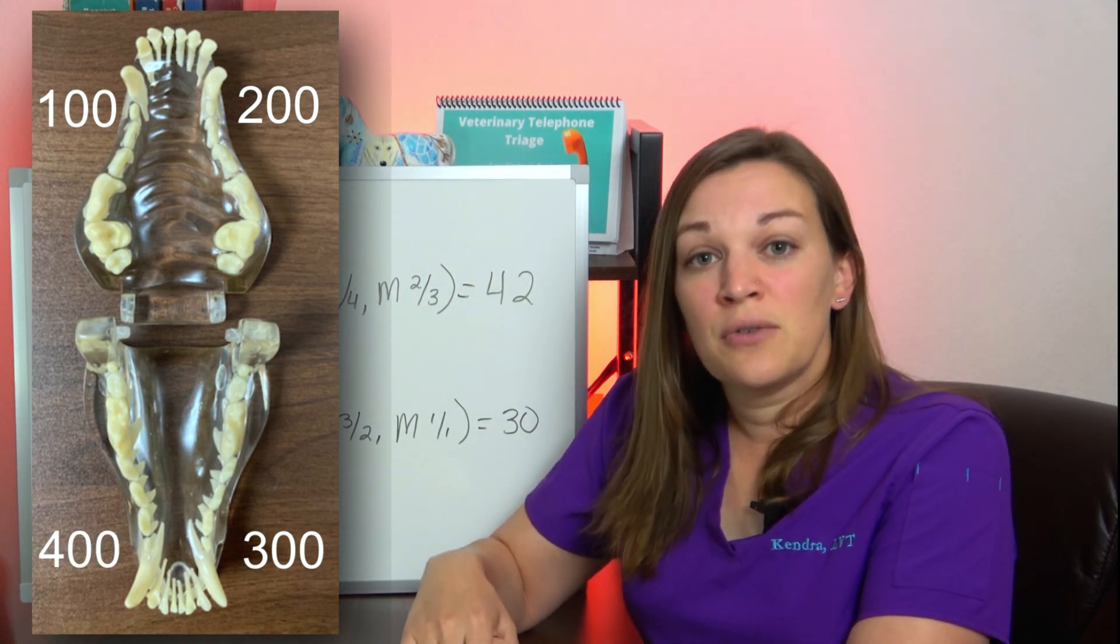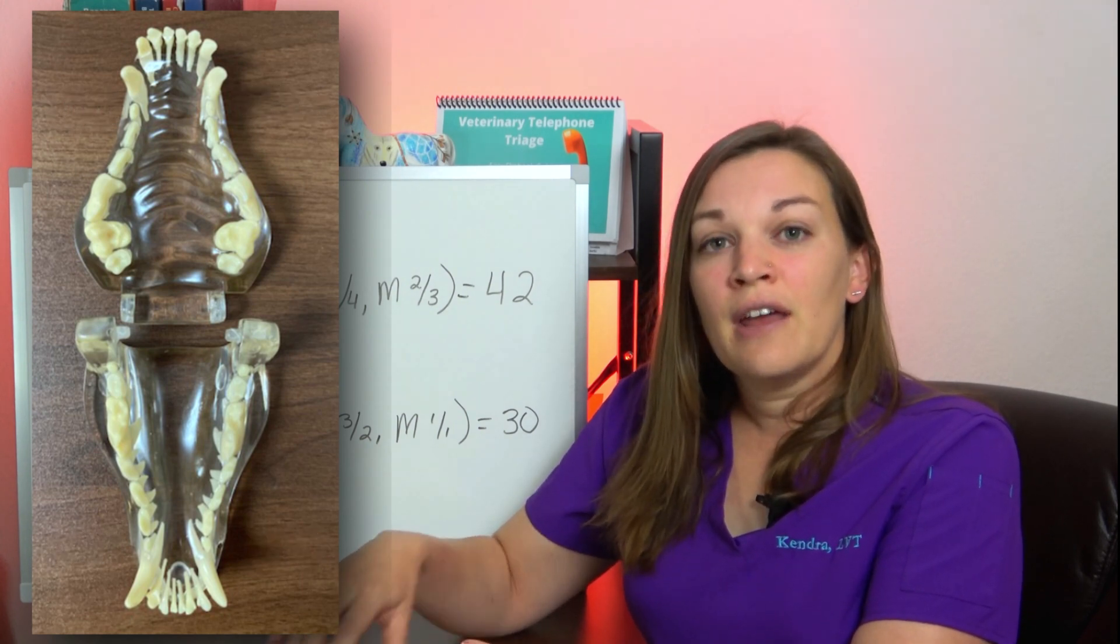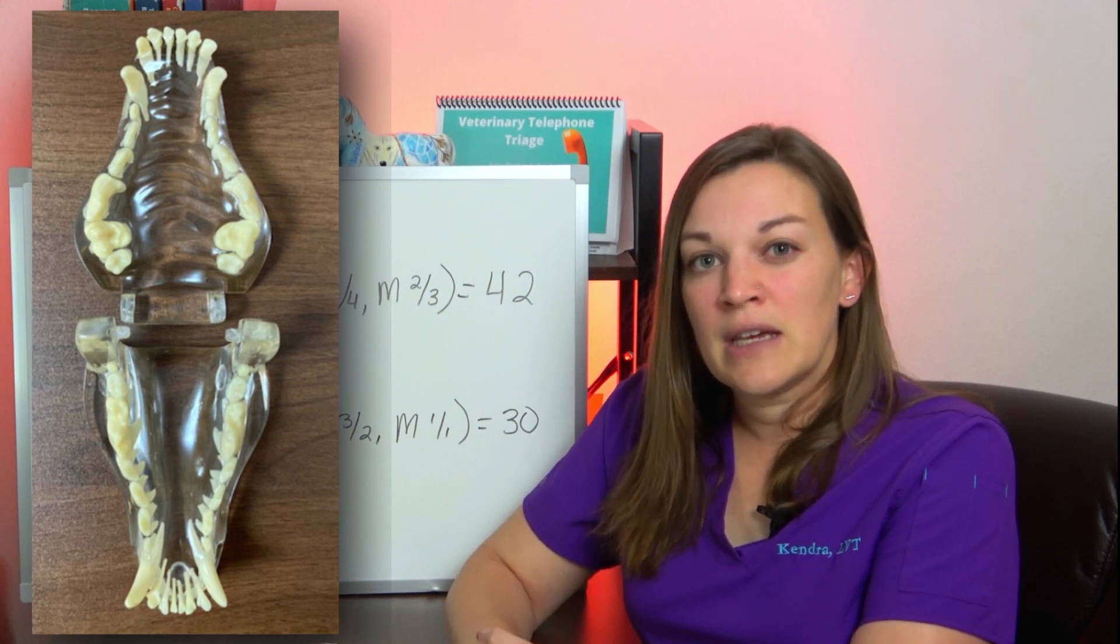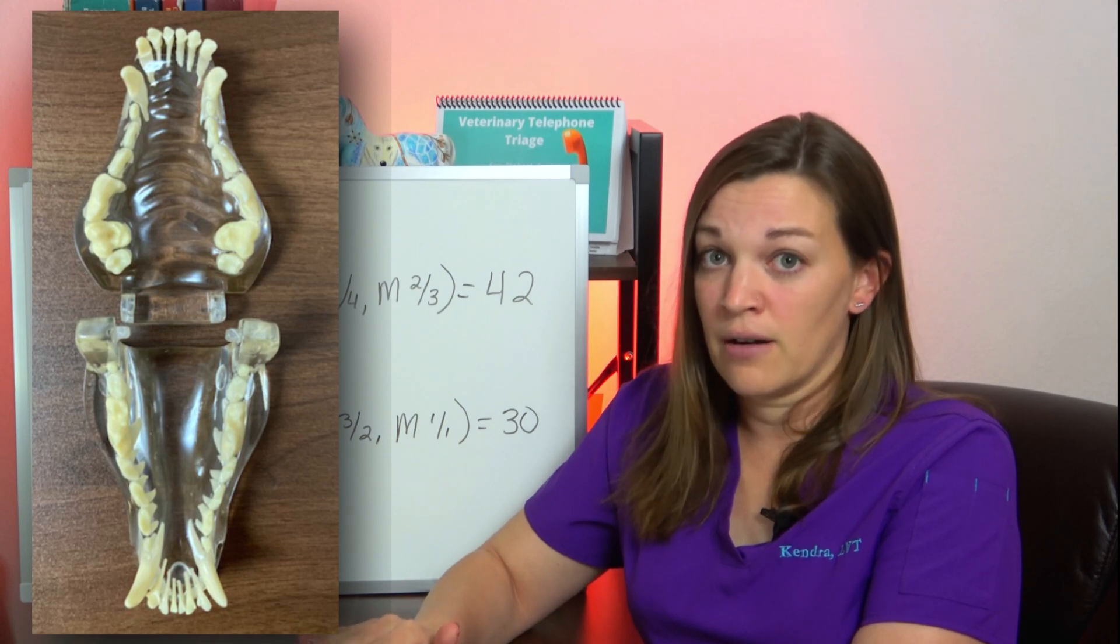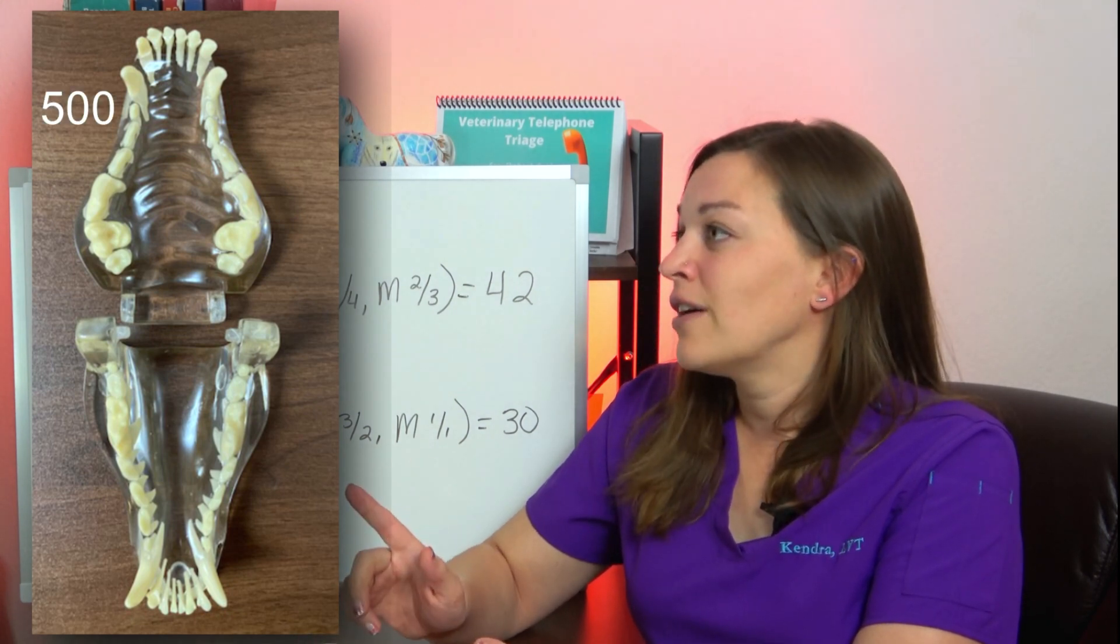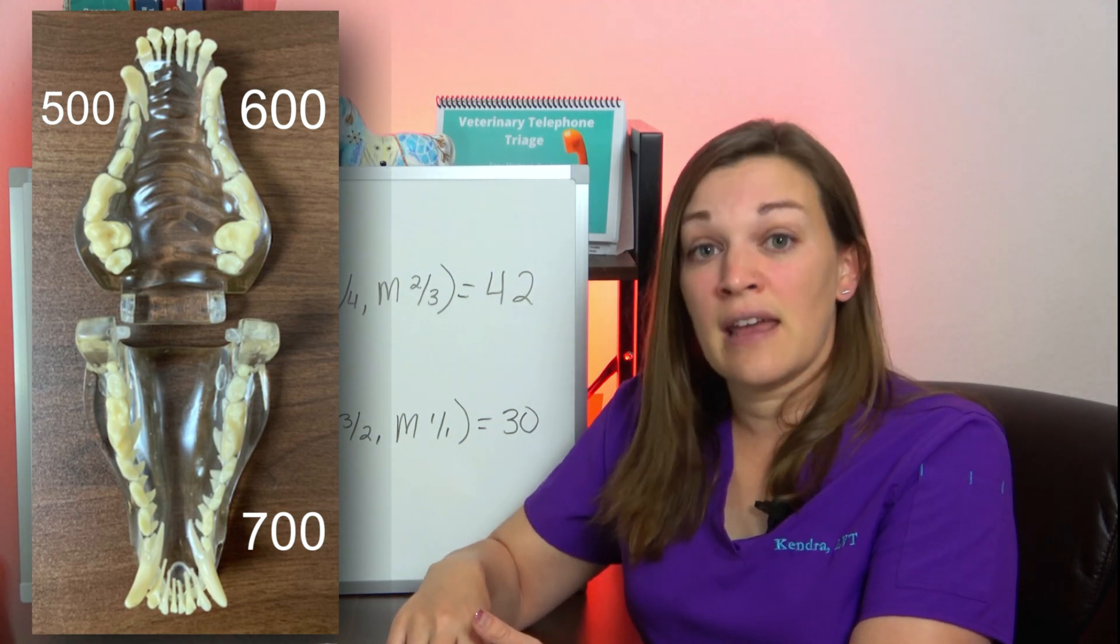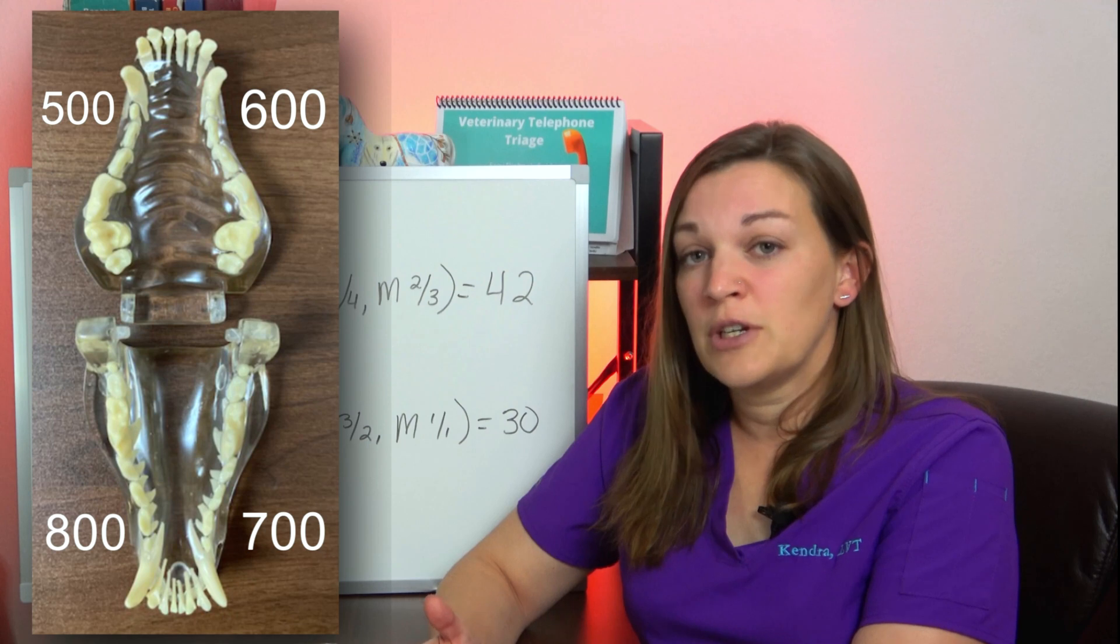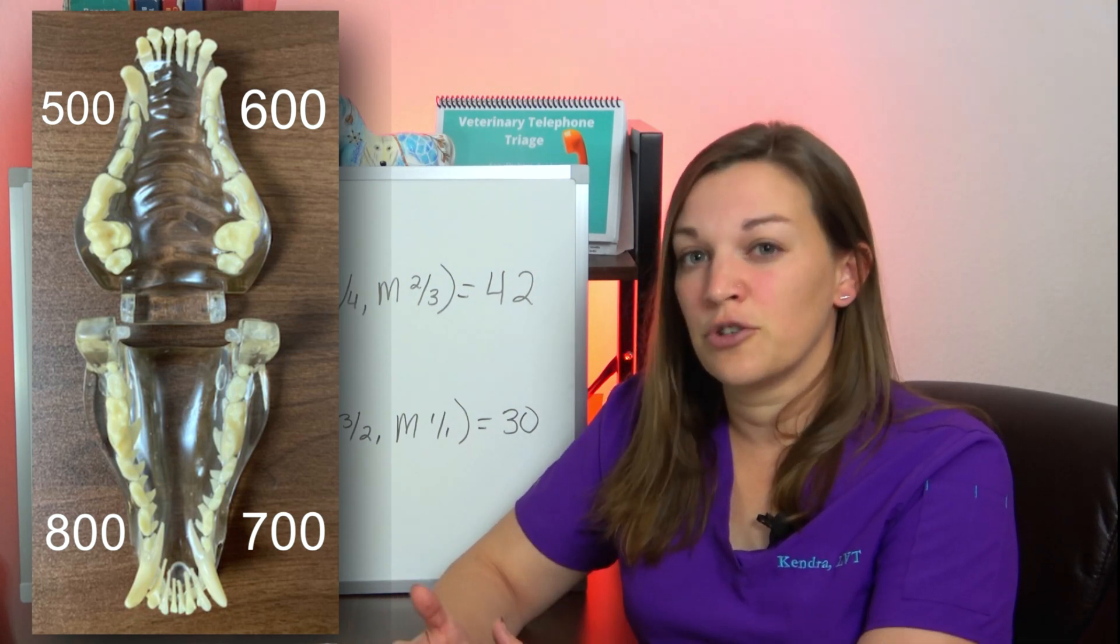I do want to let you guys know or remind you if you did already know, that if your patient has retained deciduous or baby teeth, those have their own hundred numbers that work on the same pattern, but they will be 500, 600, 700, and 800. So if you have a patient that has a retained deciduous, be sure to denote it correctly in their chart with the correct hundred block number.